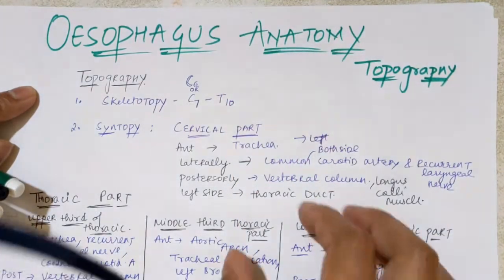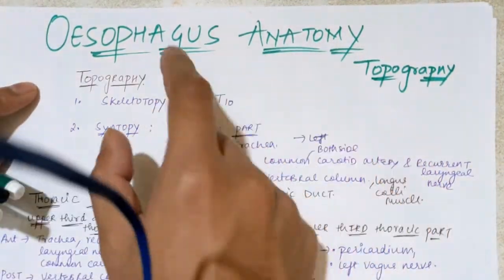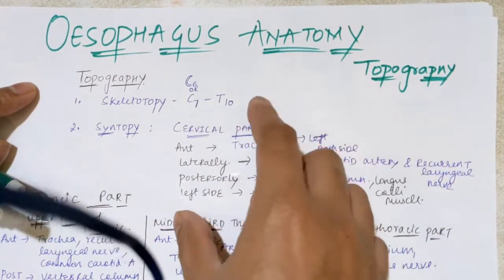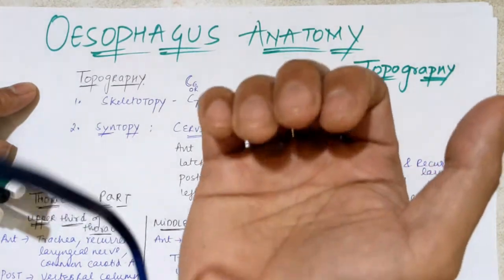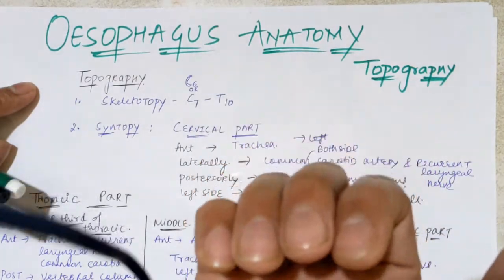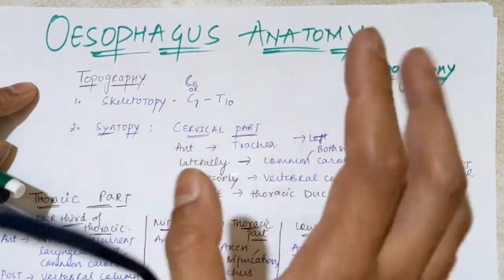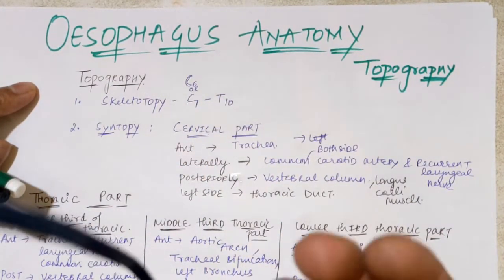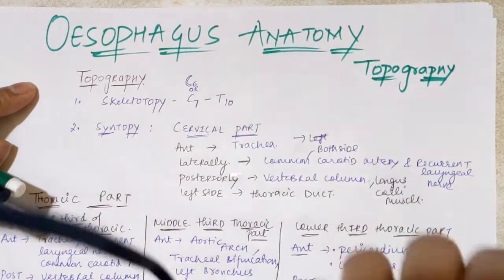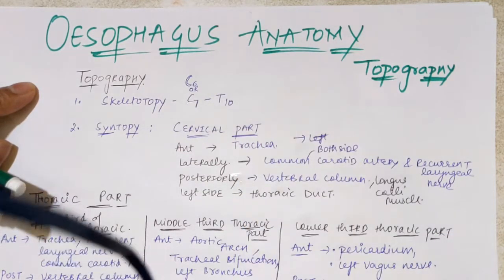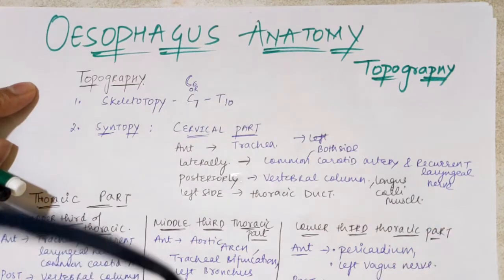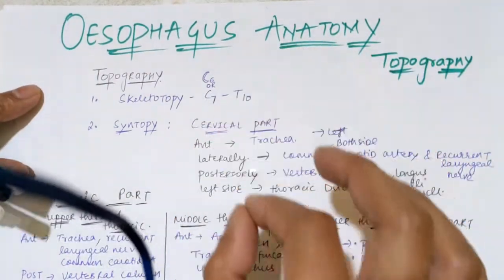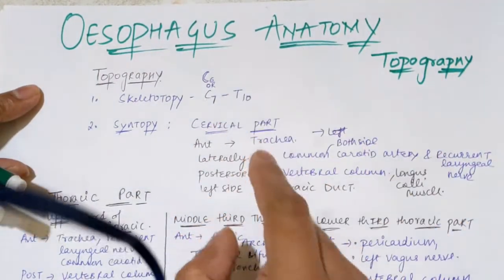For basics: the esophagus starts from the lower border of the cricoid cartilage, at the level of C6, where the pharynx ends. It ends where it pierces the diaphragm at the esophageal hiatus at the level of T10. It then opens into the stomach via the cardiac orifice at the level of T11. The esophagus has three parts: cervical, thoracic, and abdominal.